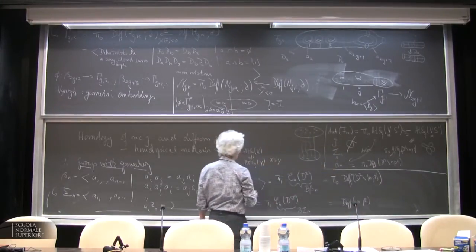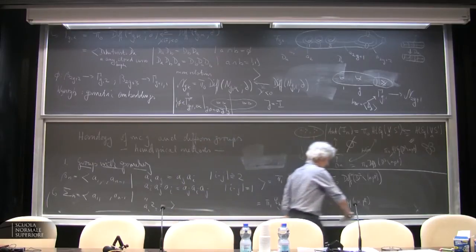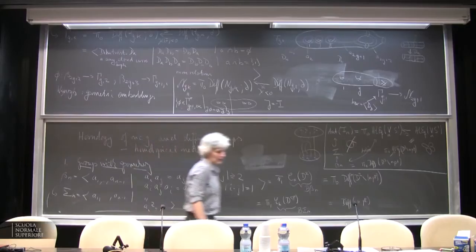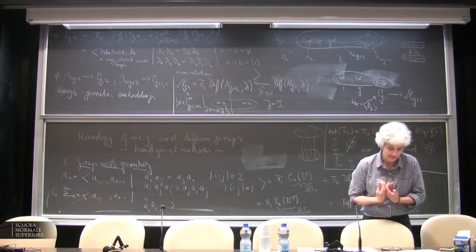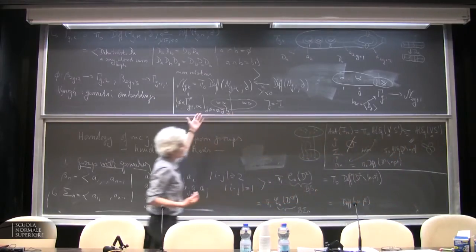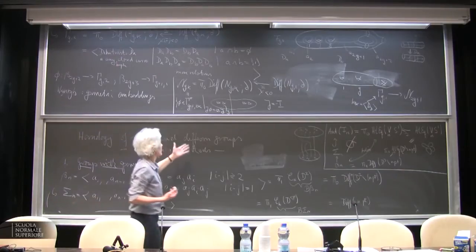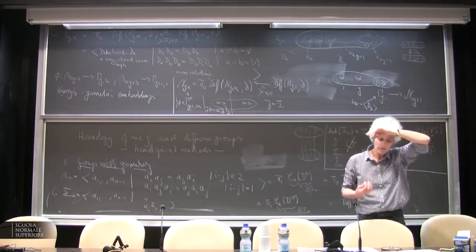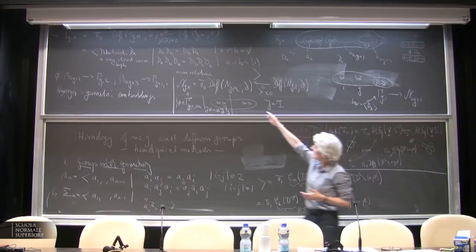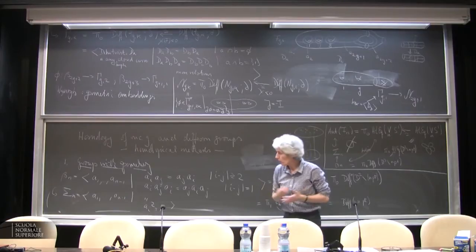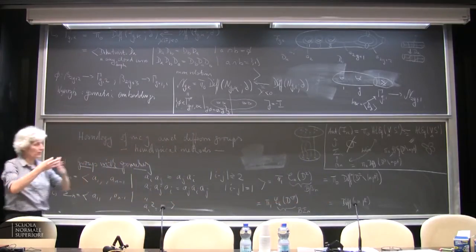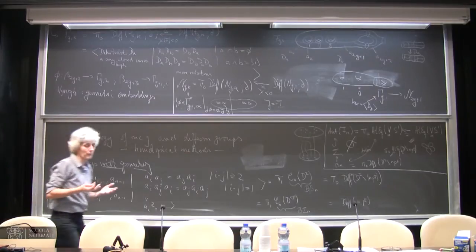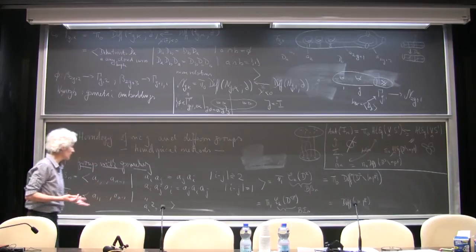This has been setting the scene for what sort of groups one might consider, and the sort of maps you get from the geometry. At the moment, I've just looked at discrete groups — ultimately these are all discrete groups — but they're coming from things that are topological groups. You might wonder what happens when we increase the dimension of these diffeomorphism groups.